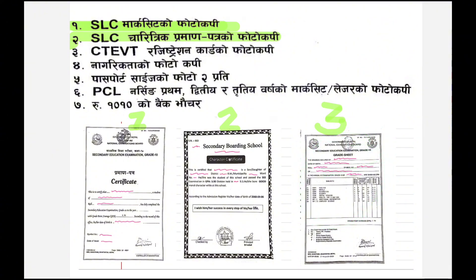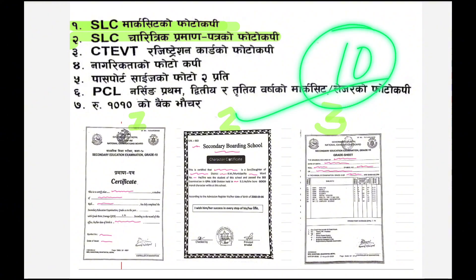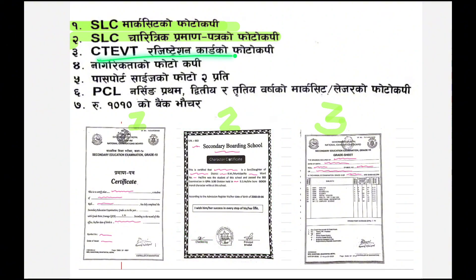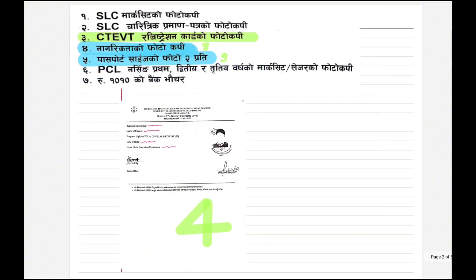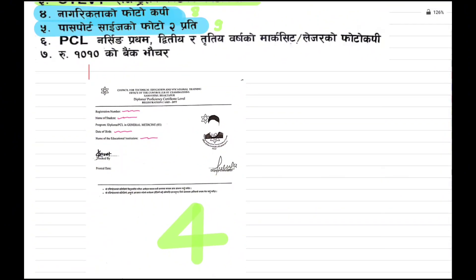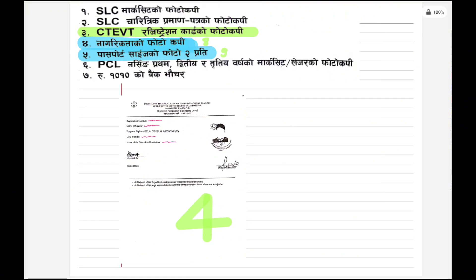The second step is the document. Some of them are very useful to have the same information, and we can use the next step to take the first step. The next step is the registration card from the CTE registry card. This will be the registration card. You can use the registration card with the original document.